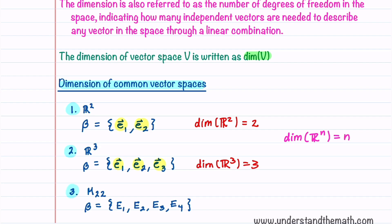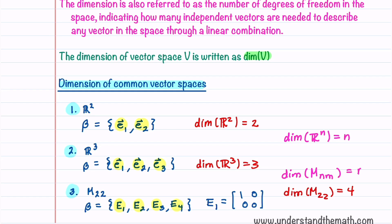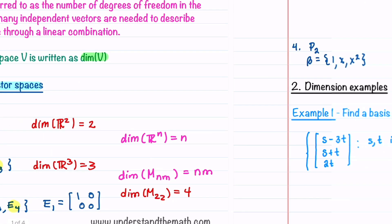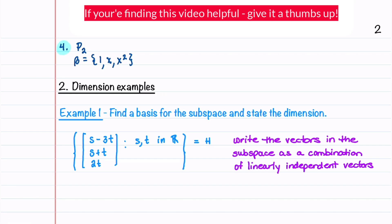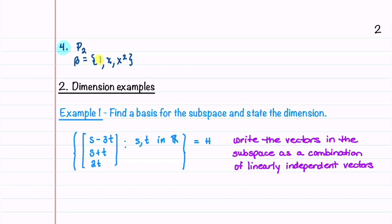The vector space of all 2×2 matrices has basis matrices e1, e2, e3, and e4, where e1 for example is equal to the matrix [1, 0; 0, 0]. Since there are 4 matrices in the basis, the dimension of M2,2 is equal to 4. Note that the dimension of Mn,m will be n times m. The vector space of all polynomials of degree less than or equal to 2 contains the basis terms 1, x, and x squared, so the dimension of P2 is equal to 3.